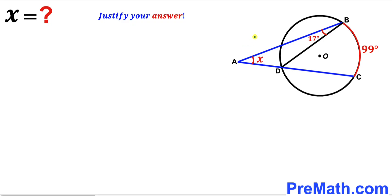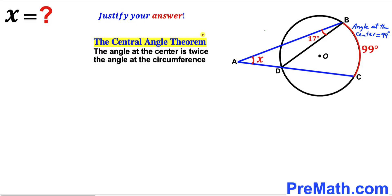Let's make an observation. We know arc BC measures 99 degrees, so the central angle is 99 degrees as well. Recalling the central angle theorem — the angle at the center is twice the angle at the circumference — we know the central angle is 99 degrees, so the angle at the circumference is half of 99 degrees, which is 49.5 degrees.